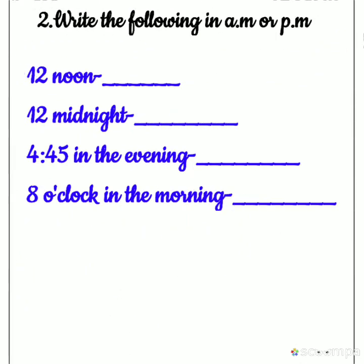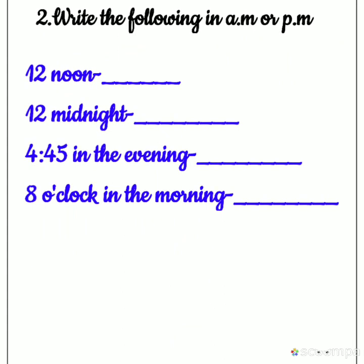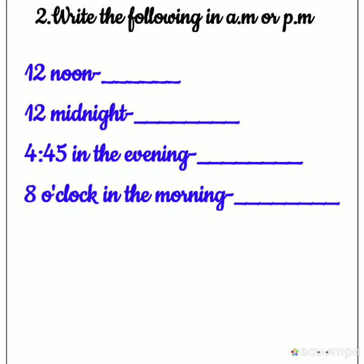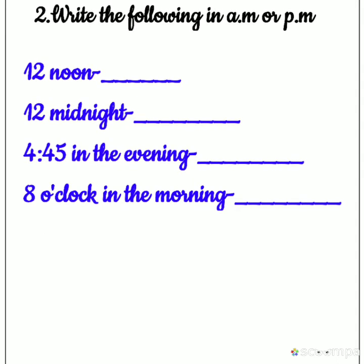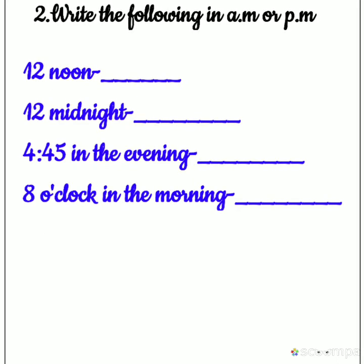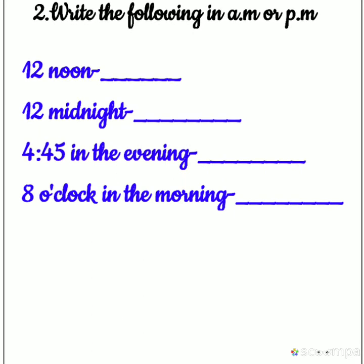Year hoga 2020. Theek hai? Second question: write the following in a.m. aur p.m. Neeche kuch time diya hua hai, uske saath a.m. lagega ki p.m., yeh aapko likhna hai. Jaise 12 noon — din ke 12 baje. Din ke 12 baje se toh p.m. start ho jaata hai.